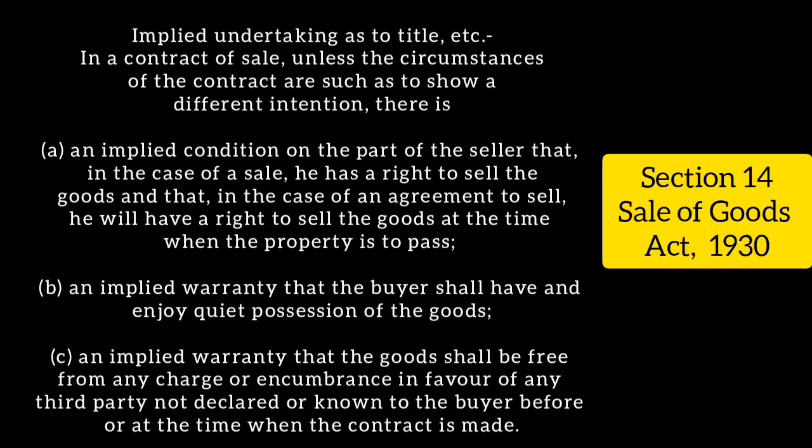This clause provides an implied warranty against incumbrances, meaning the goods sold are free from incumbrances in favor of any third party. Incumbrances means there is a burden on the goods. If there is a charge or incumbrance on the goods, the buyer has the right to discharge it and is entitled to get compensation from the seller.